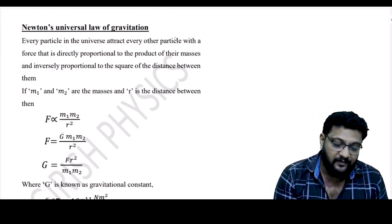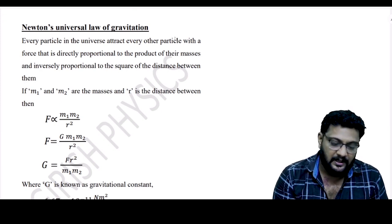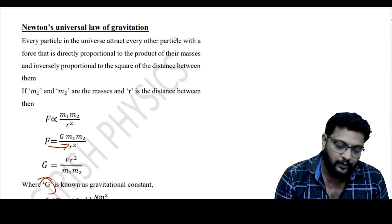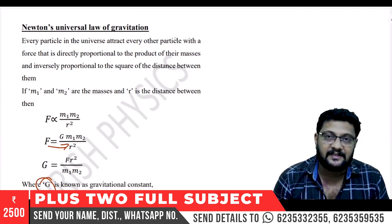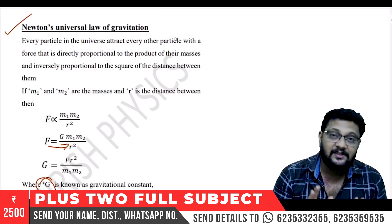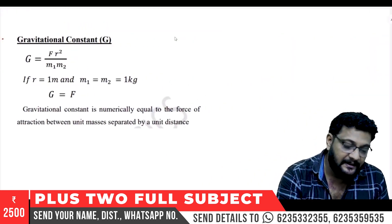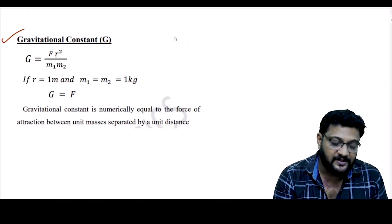Mathematically, F is proportional to M1·M2 / R². So F = G·M1·M2 / R², where G is the gravitational constant, given by G = F·R² / (M1·M2).